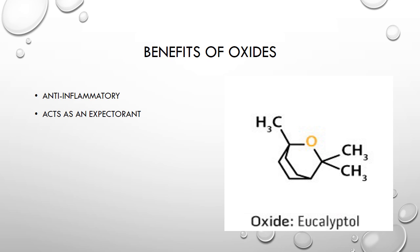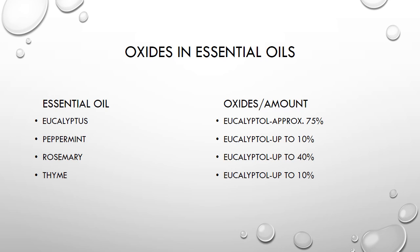The last oxygenated compound found in essential oils is oxides. Benefits of oxides include being anti-inflammatory and acting as an expectorant — an expectorant allows you to cough up mucus. This is an example of an oxide found in essential oils, where the oxygen atom is in a ring structure. Specific examples include eucalyptus, peppermint, rosemary, and thyme — it's the same oxide but found in different amounts depending on the essential oil.